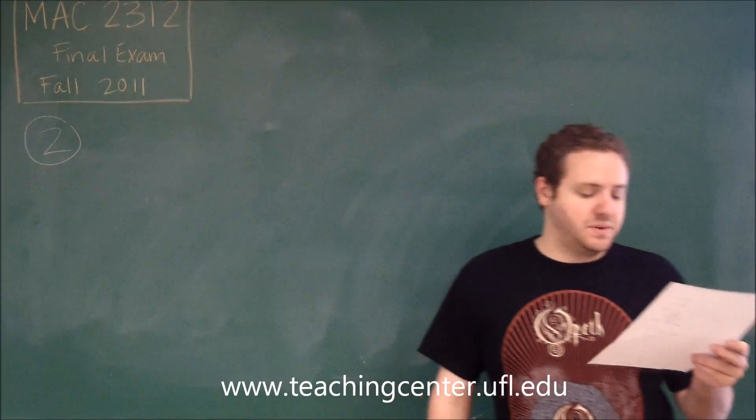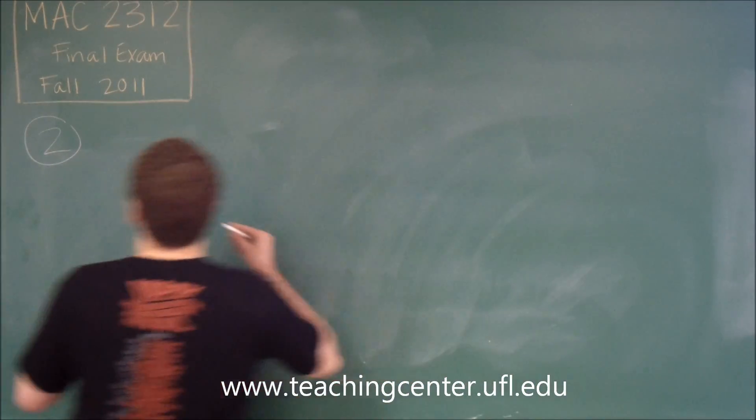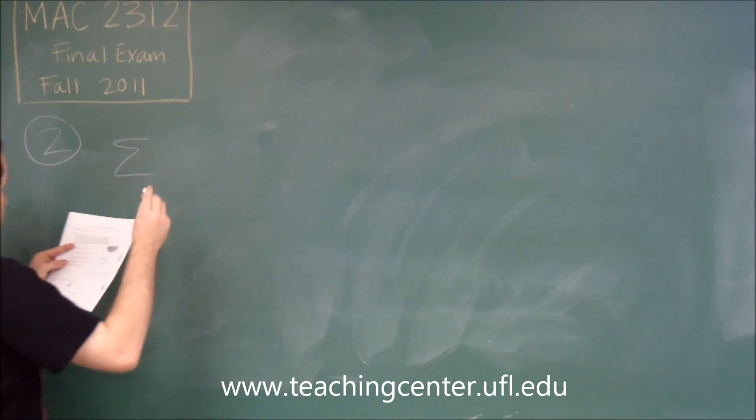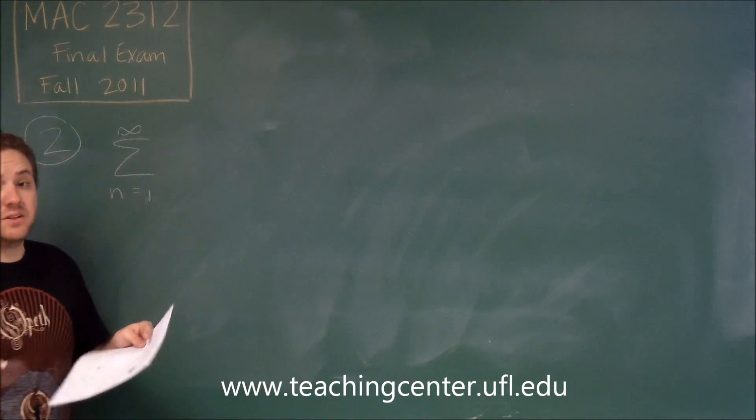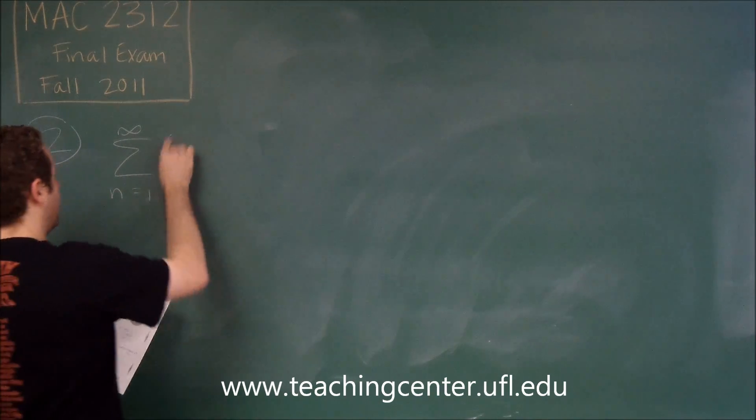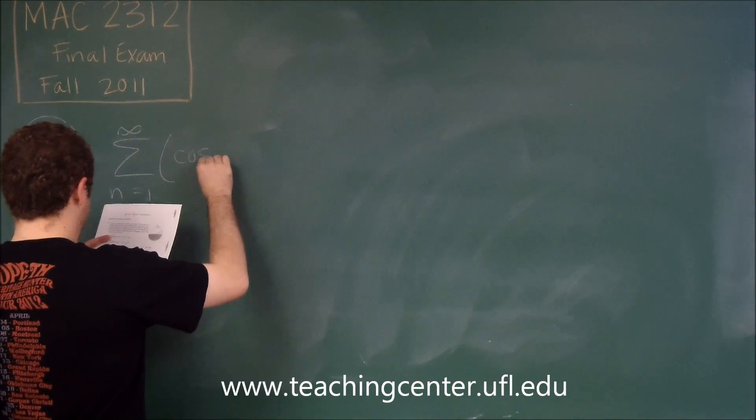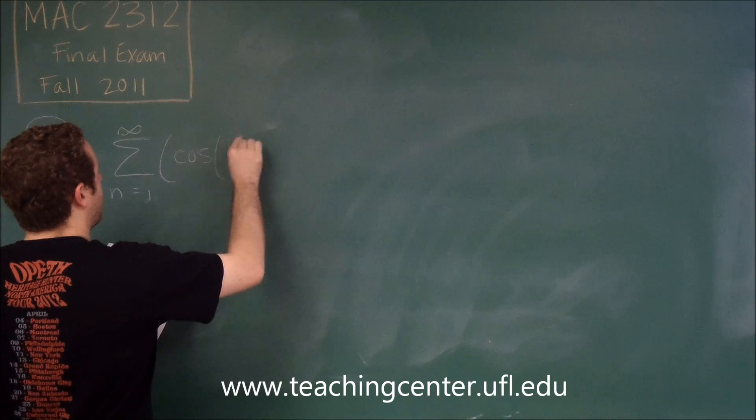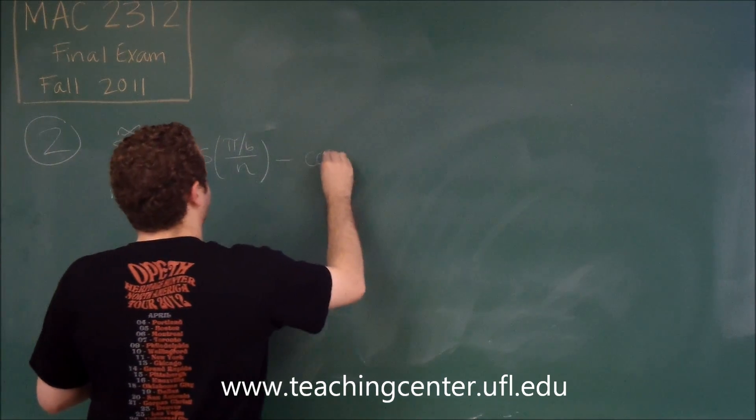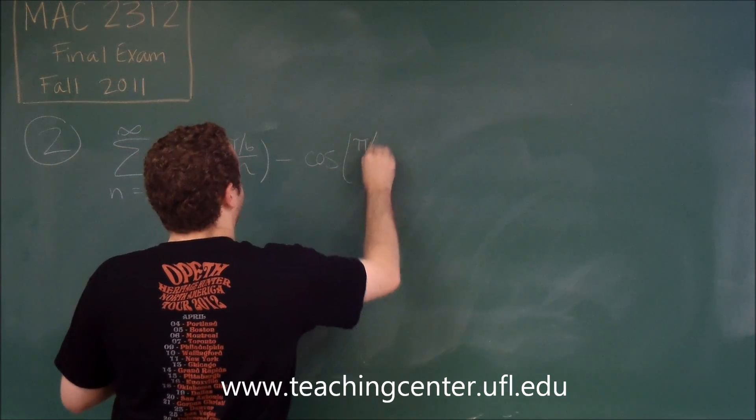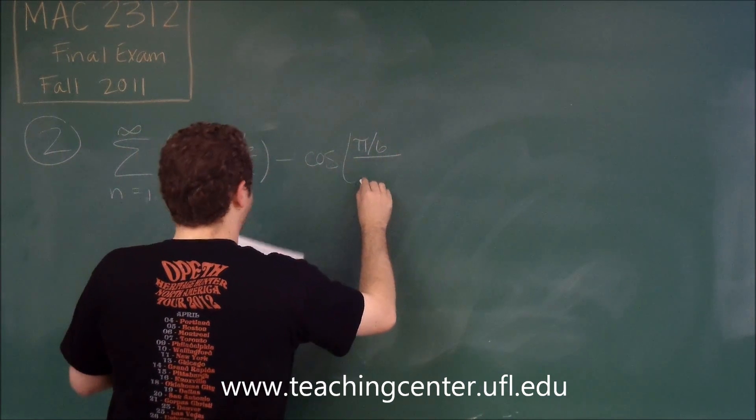On problem number two, we're asked to compute the sum, and we have what should be recognizable as a telescoping series. So we have cosine of pi over 6 over n minus cosine of pi over 6 over n plus 1.